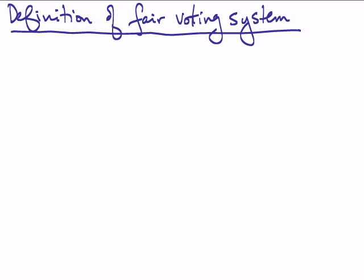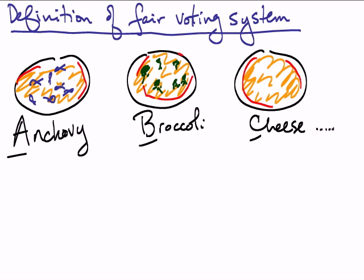In defining our fair voting system, I'm going to use a non-controversial example, well I hope it's non-controversial. Instead of picking between laws or politicians, we're going to be picking between pizzas. So here I have anchovy, broccoli, cheese, and I have dot dot dot to indicate there may be other choices. The idea is that we have a group of people, each person has certain preferences. They prefer A to B to C, and so forth. Person two might prefer B to A to C, that kind of thing.